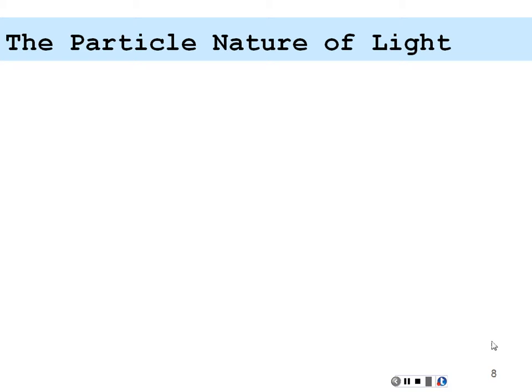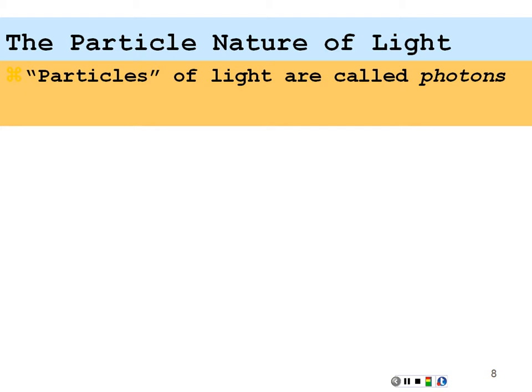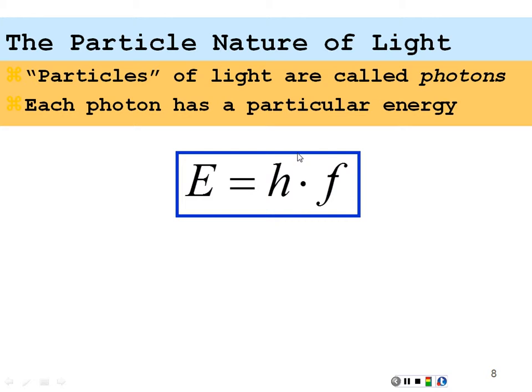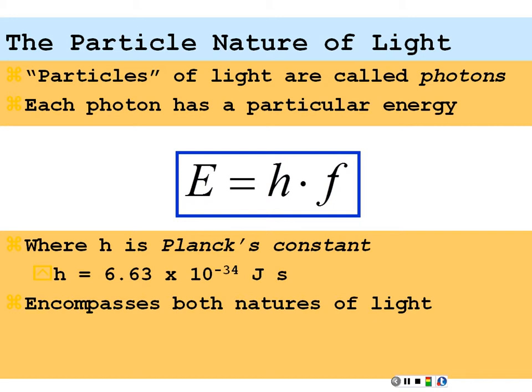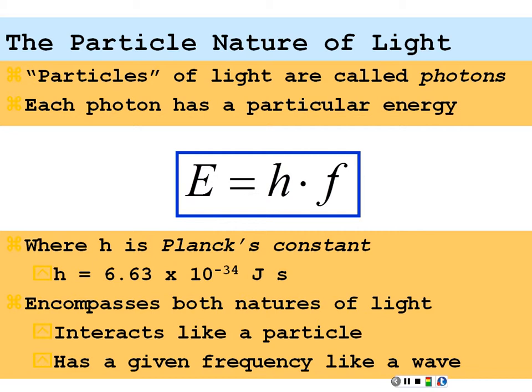If you treat light as a particle, particles of light are called photons, and each photon has a particular energy. The energy is equal to some constant times the frequency of light — the value of that constant is 6.63 times 10 to the minus 34 joule-seconds. This equation E equals h times frequency encompasses both natures of light: it treats light as discrete bundles of energy, yet frequency is something we associate with the wave nature of light. So light interacts like a particle but has a given frequency like a wave — this photon equation really encompasses the two natures of light.